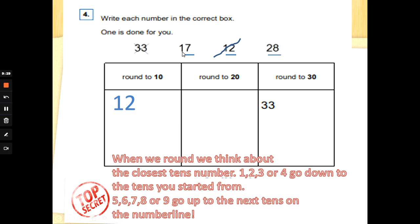Now look at seventeen. One ten and seven ones. Five, six, seven, eight, or nine go up to the next tens on the number line. Is seventeen closer to ten? Does it round to ten? Or is it closer to twenty? Does it round to twenty? Well, we go up to the next tens. And the next tens number after ten is twenty. So seventeen would go in that box. Don't forget to cross it out when you've had a go. Now what about twenty-eight? Is it closer to twenty? Does it round to twenty? Or is it closer to thirty? Twenty-eight. It's got eight ones. Five, six, seven, eight, or nine go up to the next tens on the number line. The next tens number after twenty is thirty. So twenty-eight rounds to thirty. Look at all the work you've got to do to get that point. Well done. Great try.